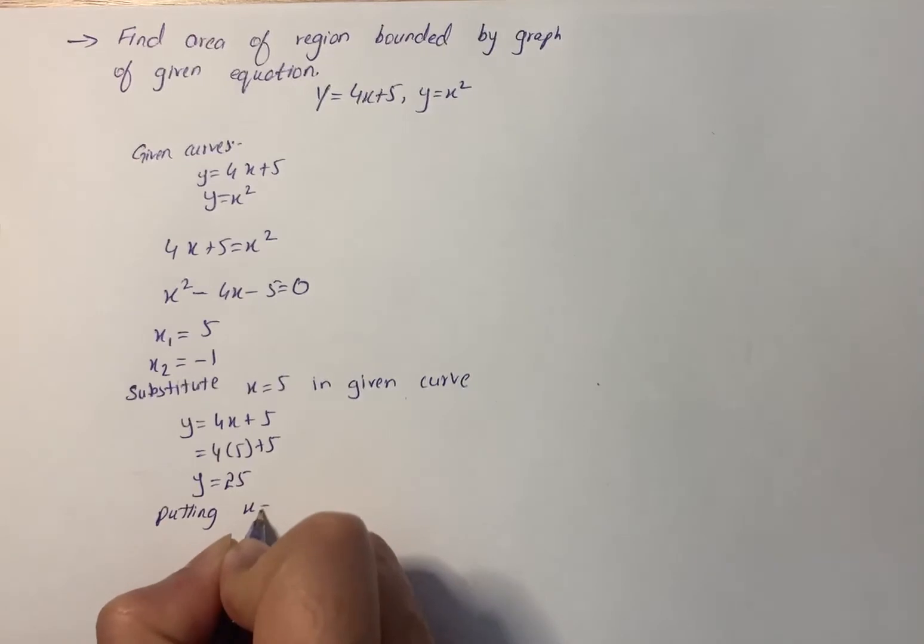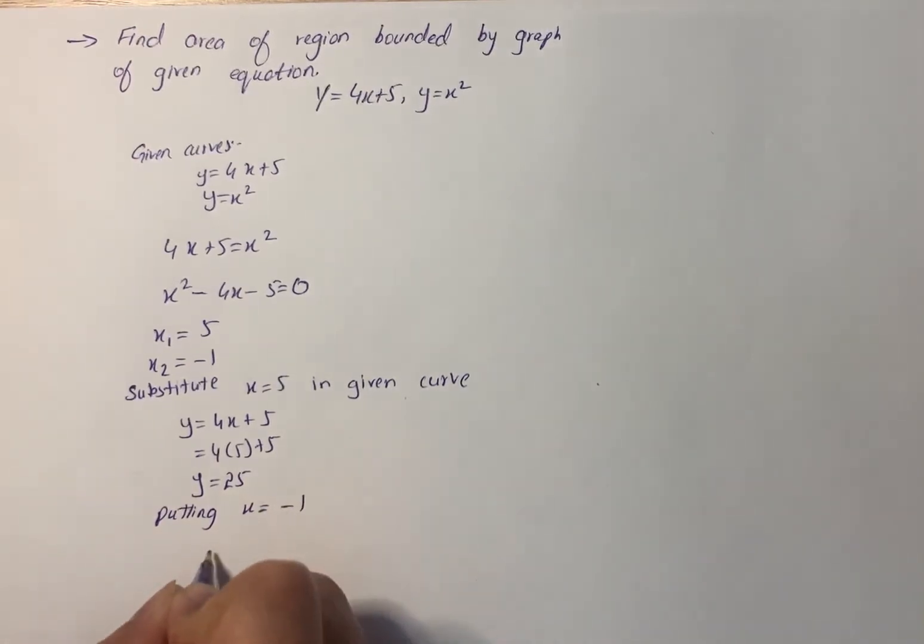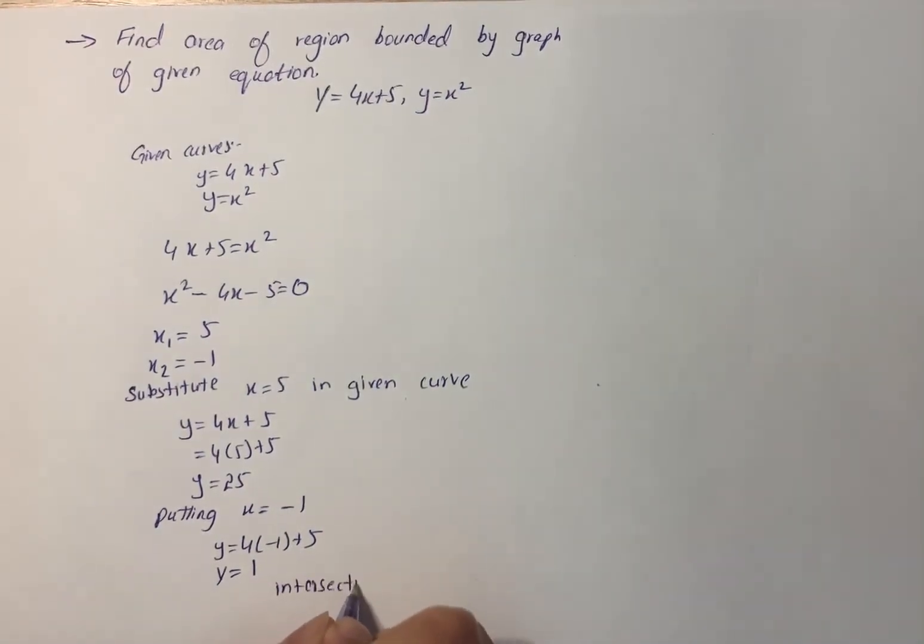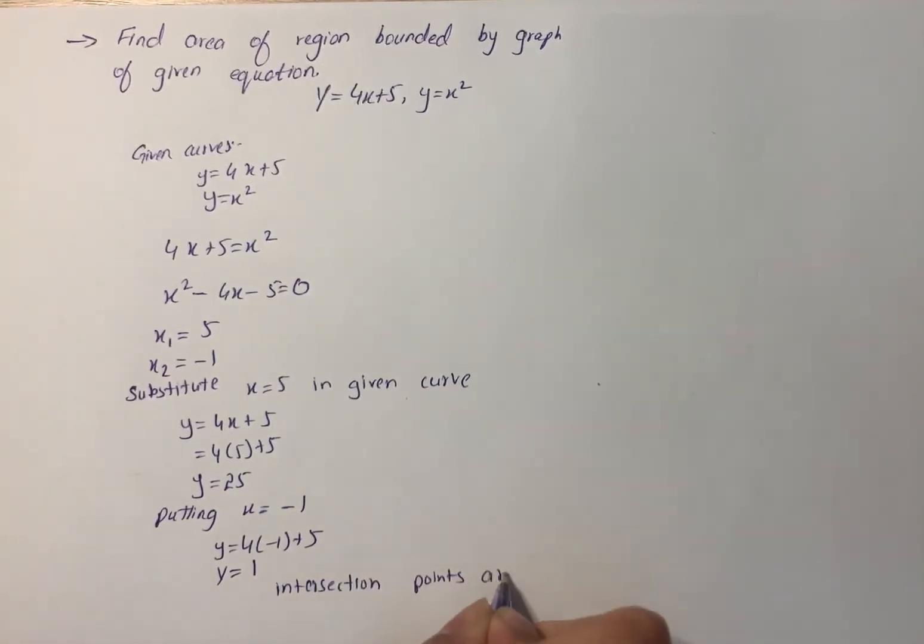Putting x equals minus 1, so y equals 4 into minus 1 plus 5, so y equals 1. Therefore, the intersection points are (-1, 1) and (5, 25).